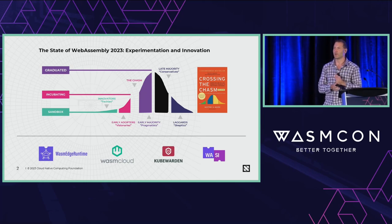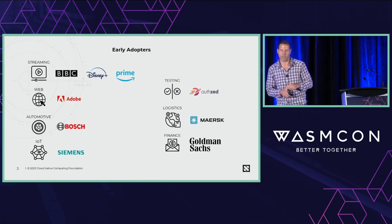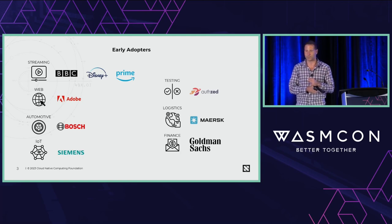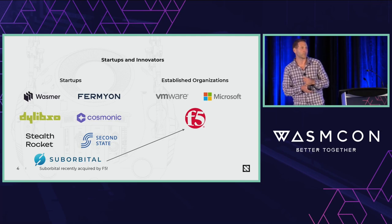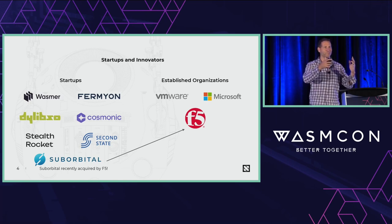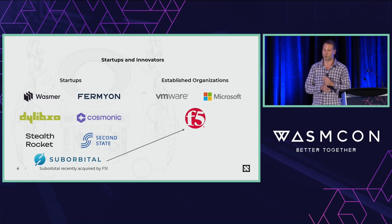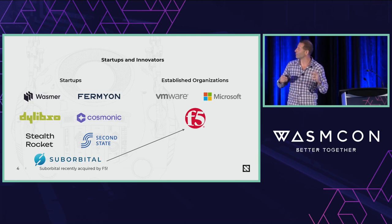One interesting thing from our community: people asked what are others doing and how can we make things better? So we talked to a lot of our member community and found there are actually a lot of early adopters in WASM. We have folks like BBC, Disney, Amazon using WebAssembly technology, Bosch in the automotive sector, Goldman Sachs in the finance sector. There's a lot of companies experimenting and sharing what they're doing. Also, there's a lot of startup innovation happening in this ecosystem — people taking bold bets and trying new things. We're seeing this innovation cycle where a bunch of startups form, then natural consolidation happens, and we've already seen that with F5, an established vendor, acquiring Suborbital not so long ago.